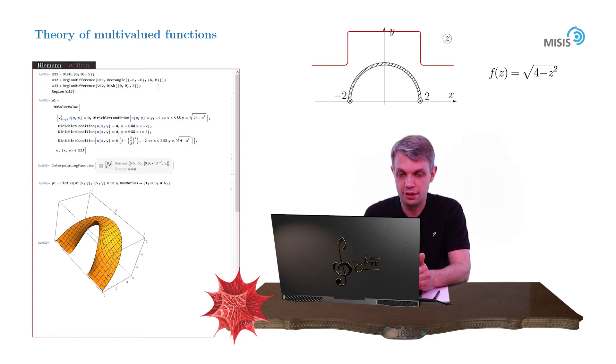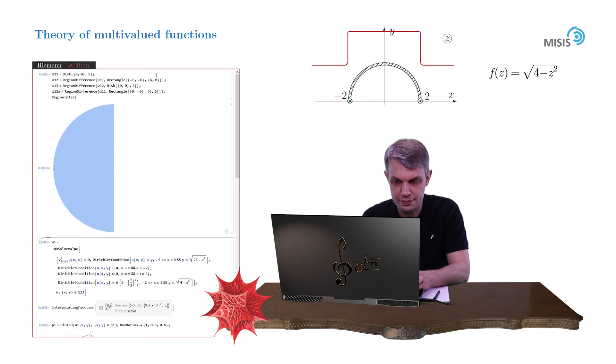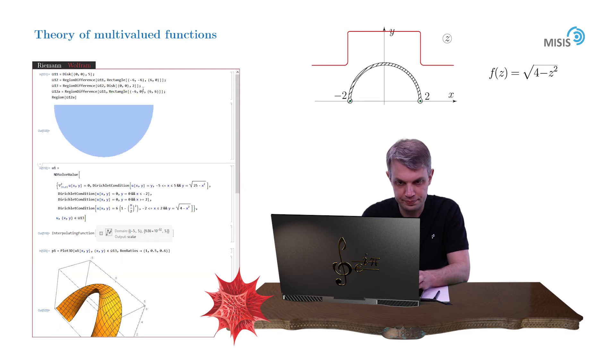First of all, let us introduce the lower semi-disc. So omega 1 2 a is equal to basically the same region, but we'll subtract a different rectangle now. So let's see if it works. Oops. Let me correct this. Now it should work. Yep.